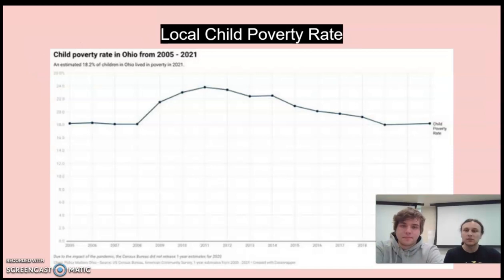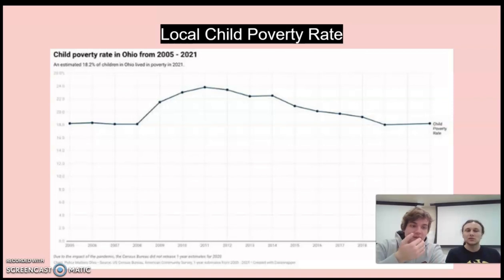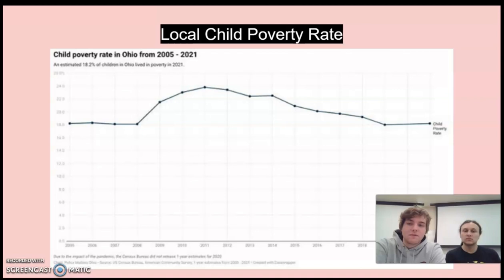Here we have the local child poverty rate in Ohio. It went from an unfortunate 18% to a peak of just under 24% in 2011. Recently it's stabilized back to where it was in 2005. As the graph shows, an estimated 18.2% of children in Ohio lived in poverty in 2021.